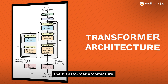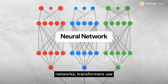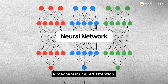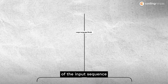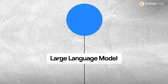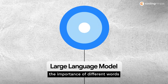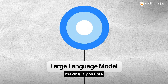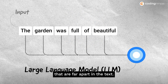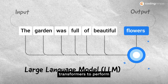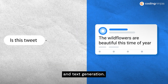Let's start by understanding the transformer architecture. Unlike traditional neural networks, transformers use a mechanism called attention, which allows the model to focus on different parts of the input sequence to understand the context better. The attention mechanism helps the model weigh the importance of different words in a sentence, making it possible to capture dependencies that are far apart in the text. This architecture enables transformers to perform exceptionally well on tasks like translation and text generation.